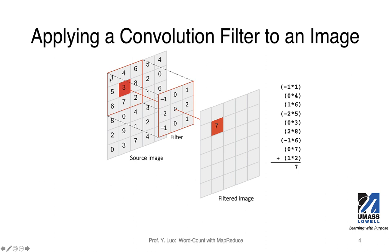For example, the pixel value here is 1, and the corresponding location in the filter is minus 1, so the product of these two numbers is minus 1. The second pixel is 4, and the corresponding location in the filter is 0, so the product is 0. Likewise, we calculate 6 by 1, which is 6. We do this for all pixels corresponding to the filter, then accumulate at the end. The total sum is 7, so the corresponding location in the original image will be changed to 7, since this is the center of the filter.